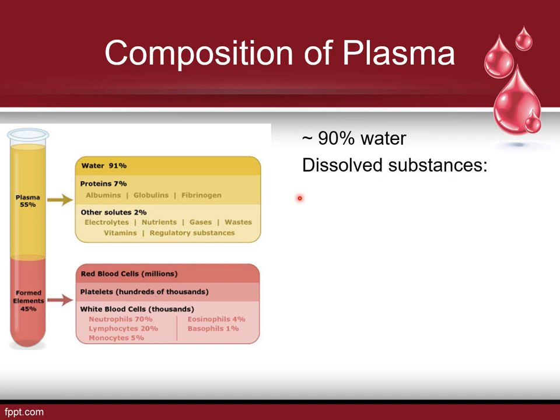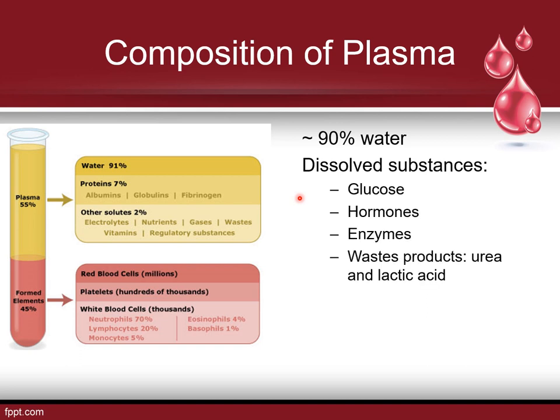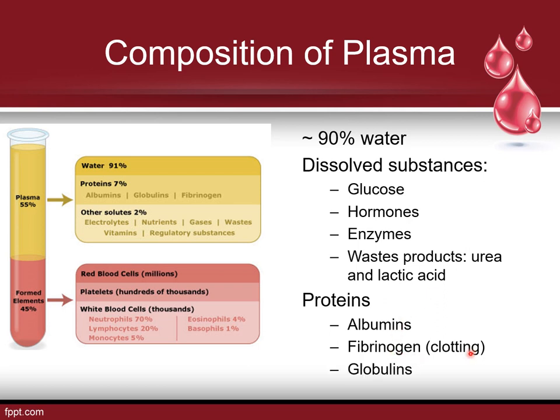Plasma is about 90 percent water, with dissolved substances including glucose, hormones, and enzymes. It also contains waste products like urea and lactic acid — urea from the kidney and lactic acid from exercise buildup. It also has proteins: albumins, globulins, and fibrinogen, which is what allows our blood to clot. Blood clotting is a good thing — we want our blood to clot so we don't bleed out — but we don't want too much of it, as that can cause other issues.